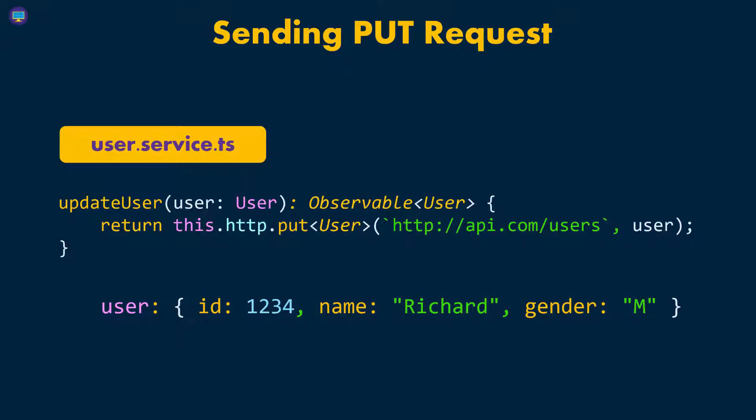And that's the main difference between PUT and PATCH. Whenever you're using PUT, you have to send the entire data. Otherwise, everything else you don't send will be set to the default value. But with PATCH, it's a little bit different — you don't have to send the entire data. Just remember that when updating data using PUT, you have to send all the properties on that specific piece of data.